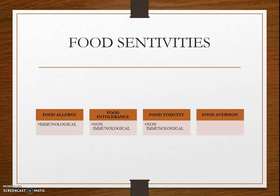Food allergies trigger the immune system, while food intolerance does not. The symptoms of food intolerance tend to take longer to appear than symptoms of allergies, and the symptoms are varied and can include migraine, cough, stomachache, etc. Some food intolerance is caused by the lack of particular enzymes — the enzymes needed to digest foods fully. If some of these enzymes are missing or insufficient, proper digestion may be undermined.